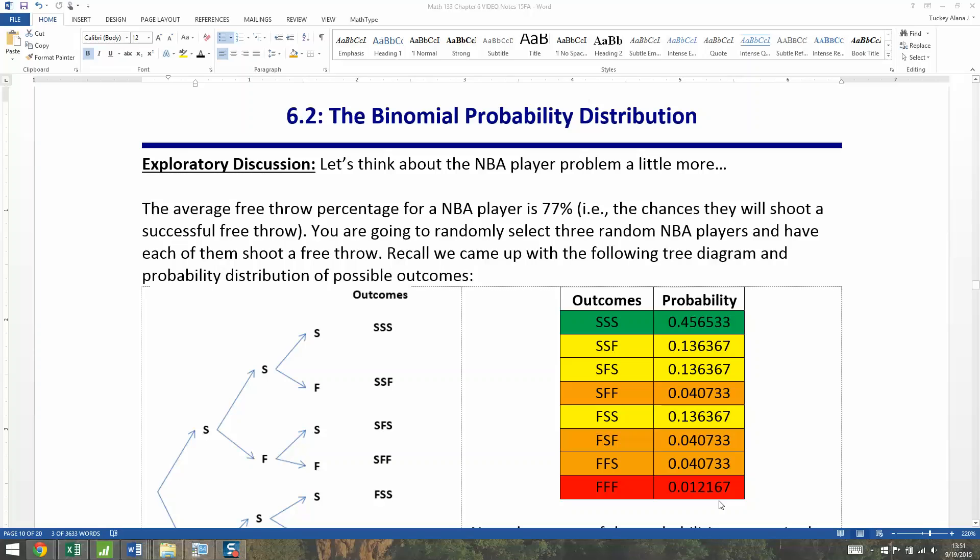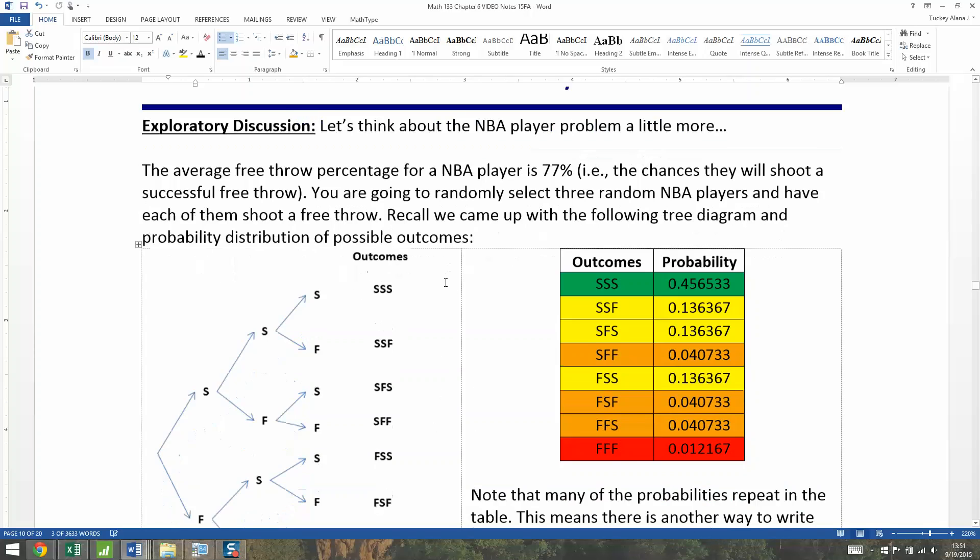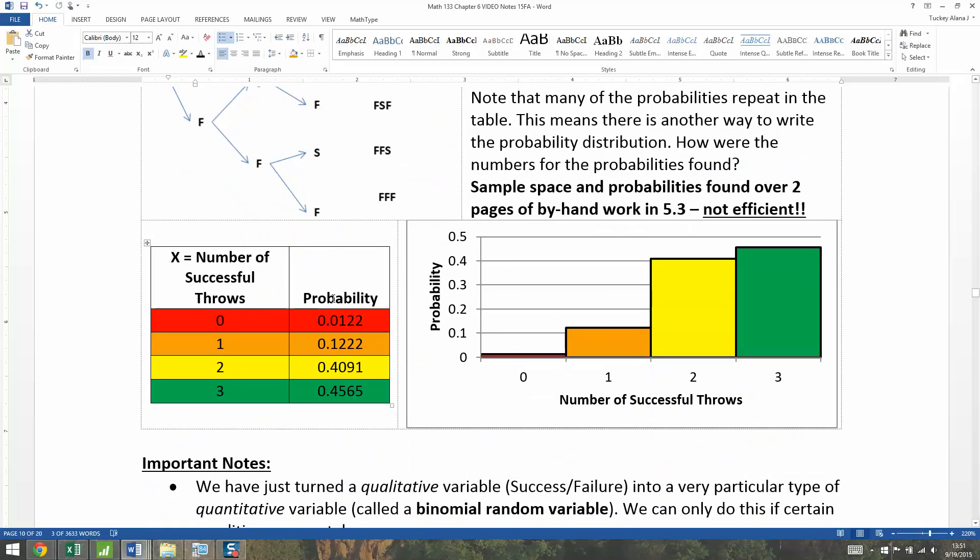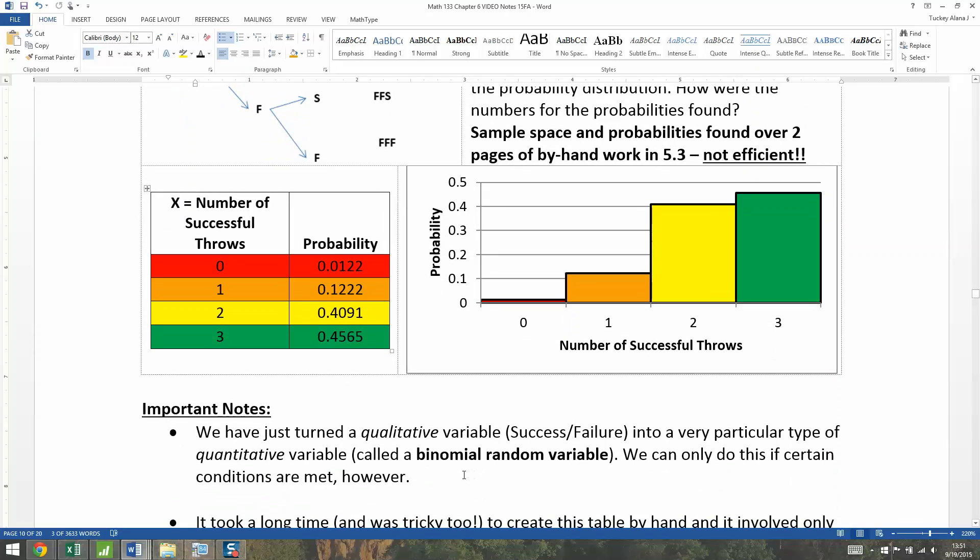We saw in our exploratory discussion that being able to convert from qualitative variables down into a discrete random variable is really nice because it'll make it so we can find these probabilities very efficiently. But it only works under very particular conditions, and the condition we're going to learn about is called the binomial random variable condition.